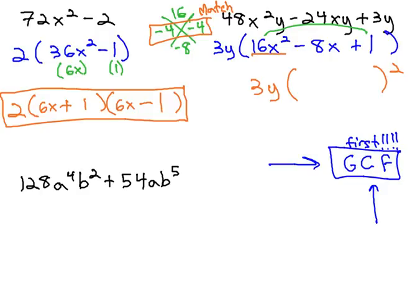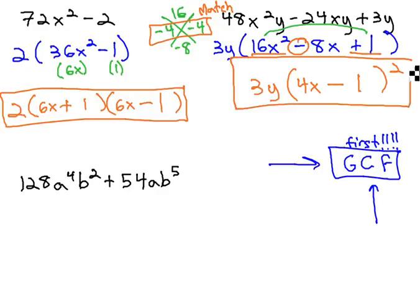We fill in the perfect square, taking the square root of the first term, which is 4x, the sign from the middle, minus, and the square root of the last term, 1. We have now factored this problem.